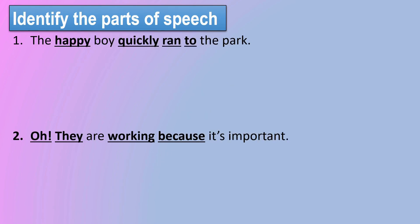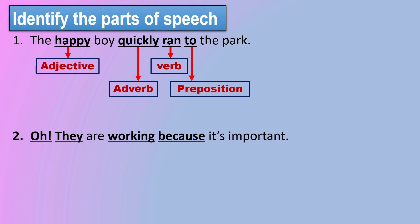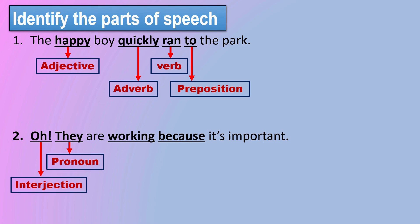Now let's check more examples with more parts of speech in a sentence. "The happy boy quickly ran to the park." In this sentence, happy is an adjective, quickly is an adverb, ran is a verb, and to is a preposition. "Oh, they are working because it's important." In this sentence, oh is an interjection, they is a pronoun, working is a verb, and because is a conjunction.